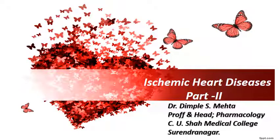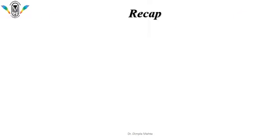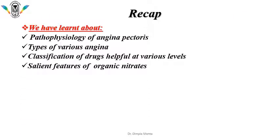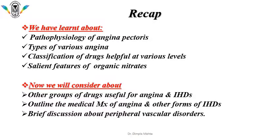Hello friends, we are continuing with our ongoing topic that is ischemic heart disease and today we will be discussing Part 2. In the previous part, we have learnt about the pathophysiology of angina pectoris, various types of angina, classified the drugs useful at various levels, and seen the salient aspects of organic nitrates. Now in this session, we will be considering other groups of drugs useful for angina and other forms of IHDs, outline the medical management, and have a brief discussion about some peripheral vascular disorders.